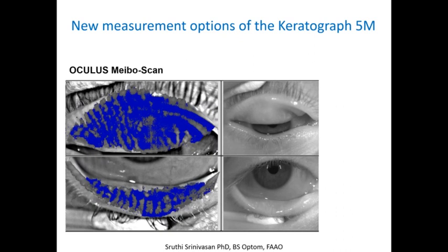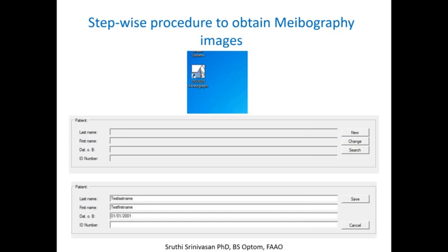Whereas in this other patient, you can see that there are hardly any glands visible in the upper lid, and on the lower lid there is a lot of loss noticed. This is obvious when the image is magnified and binarized — we no longer notice the nice parallel structures of the meibomian glands. The Keratograph is attached to a computer, and the screen has an icon called Oculus Keratograph. Double-clicking opens a new patient entry where you enter last name, first name, and date of birth.